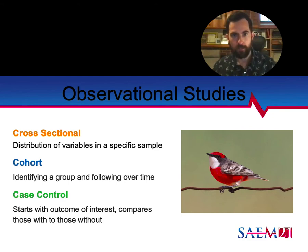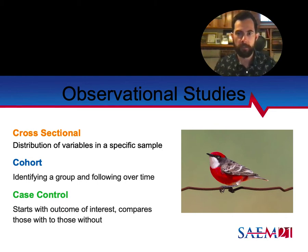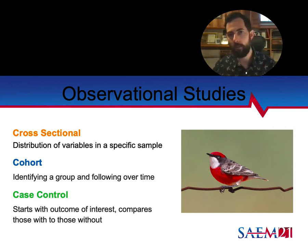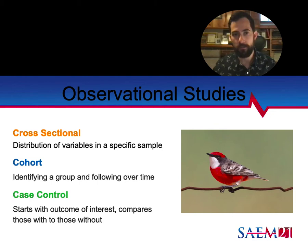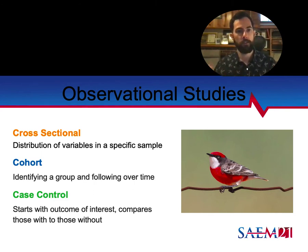Within observational studies, let's first talk about cross-sectional and cohort. Cross-sectional looks at a specific sample and the distribution of variables in the population. For example: let's say you want to know if having chats as pets is associated with winning the lottery. Just so you know — it's actually illegal to have a chat as a pet or any wild bird; I believe it's a federal offense. Anyway, we go door to door, find out how many people have chats and how many have won the lottery — that's a cross-sectional study.